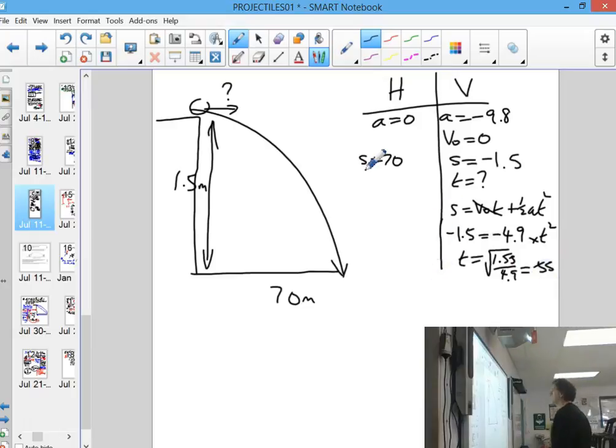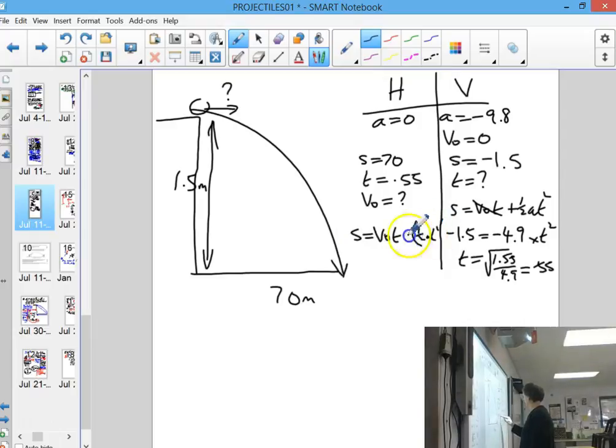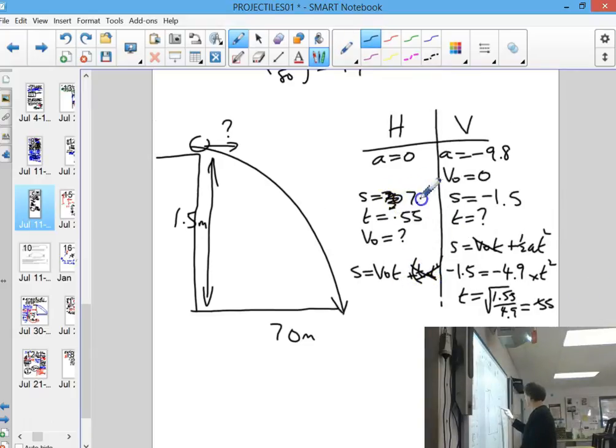Now that you know the time, we should be able to work out the velocity sideways. Because the time can come into here, and we're trying to find v₀. So you should be able to use the v₀t formula because the half at squared is going to go because a is zero. You've got 7.0 equals v₀ times 0.55. So v₀ should be 7.0 divided by 0.55, which would be 12.7 meters per second.